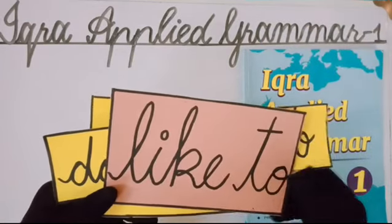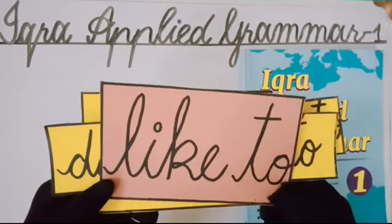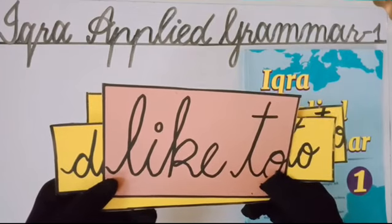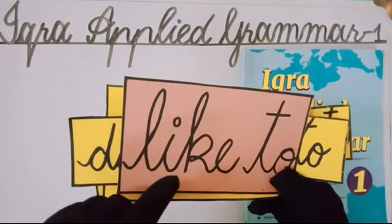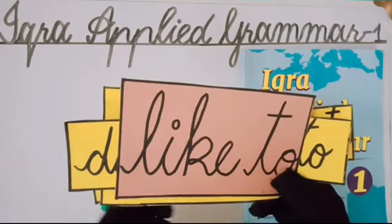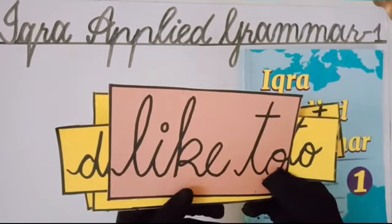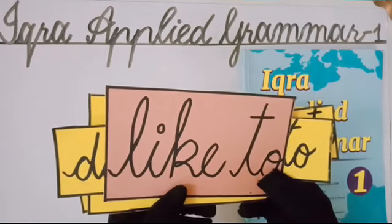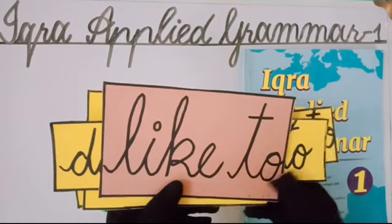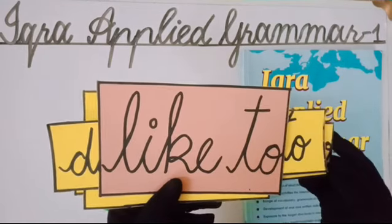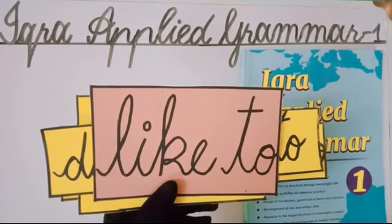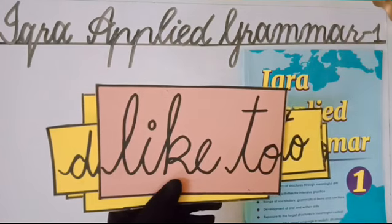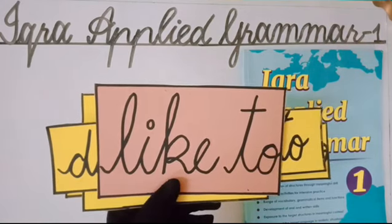The second important thing to keep in mind is that you will use 'like to,' 'do not like to,' 'love to,' and 'do not love to' with plural nouns and pronouns. We practiced this topic yesterday and we will continue to practice it today.